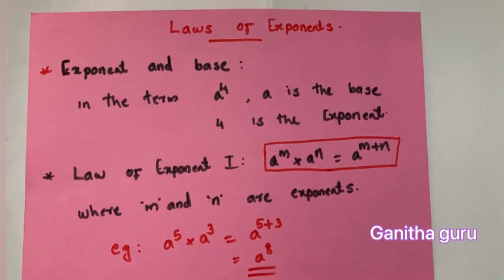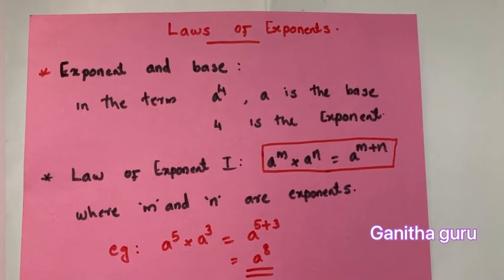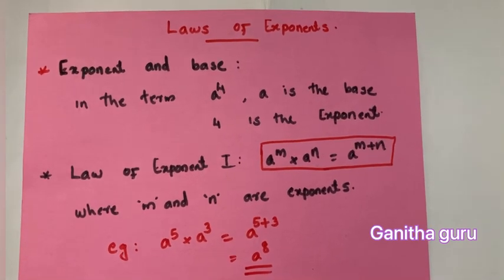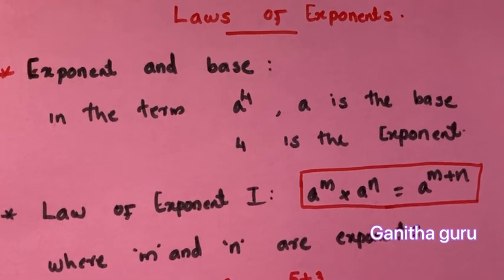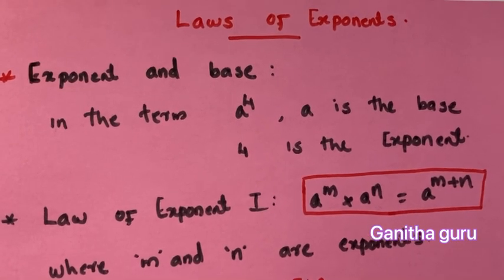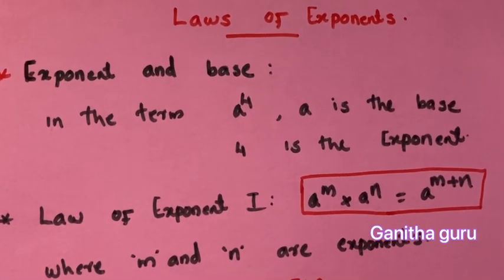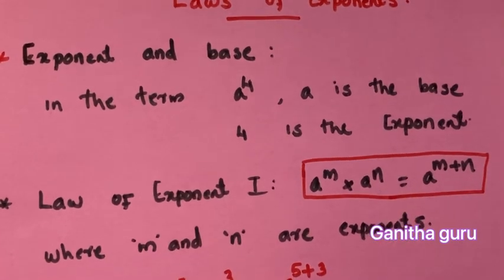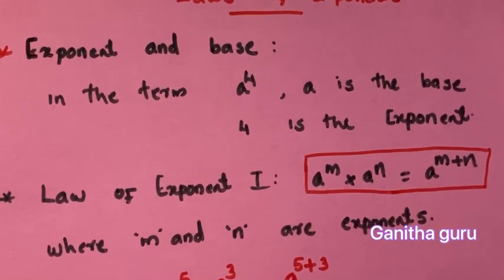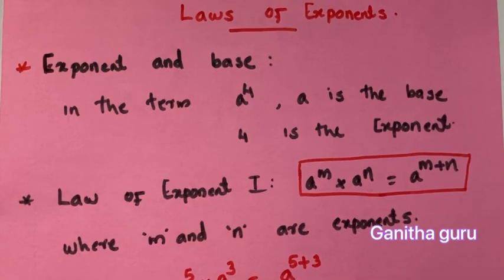The first concept is the base and exponent. In the expression a raised to 4, 'a' is the base and 4 is the exponent. This means 'a' is multiplied by itself 4 times.